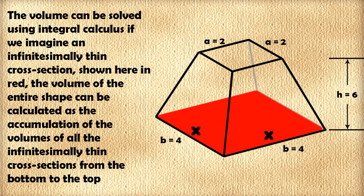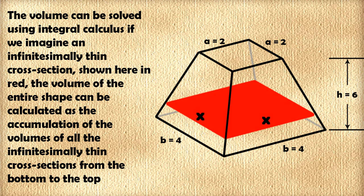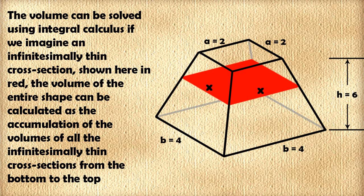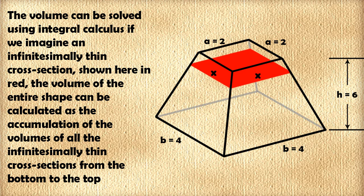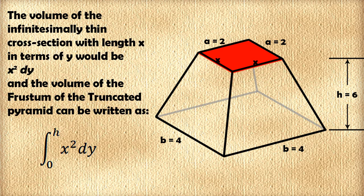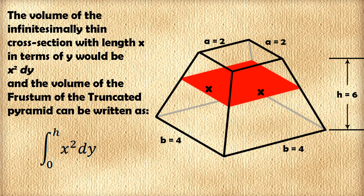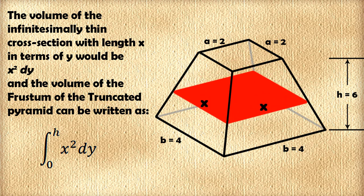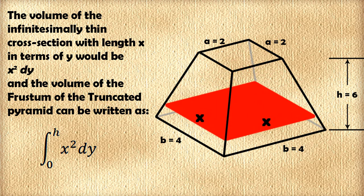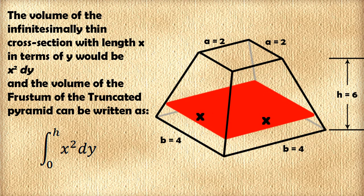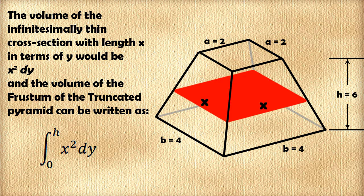The volume of the entire frustum of the truncated square pyramid can be calculated as the accumulation of the volumes of all the infinitesimally thin cross-sections from the bottom to the top. The volume of the truncated square pyramid can be written as the integral from 0 to the height of the pyramid x squared dy.